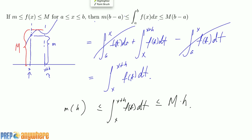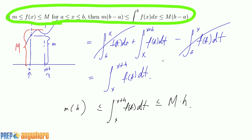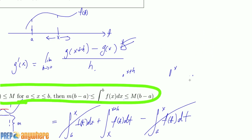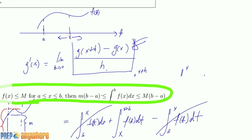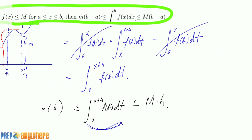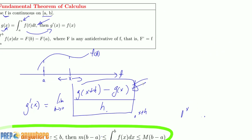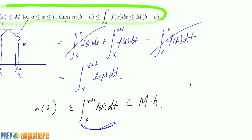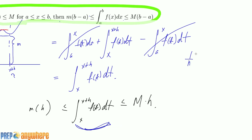We talked about this last class. Now I'm going to divide the center by h, but if I want to do that I have to divide everything by h, because what we originally wanted was the difference quotient. So I get: m ≤ (1/h) · integral from x to x+h of f(t) dt ≤ M, which gives us the derivative expression.